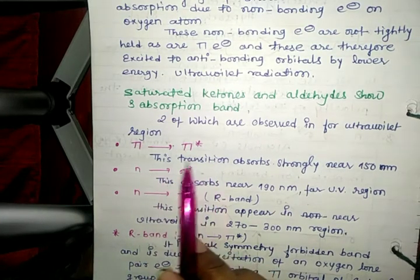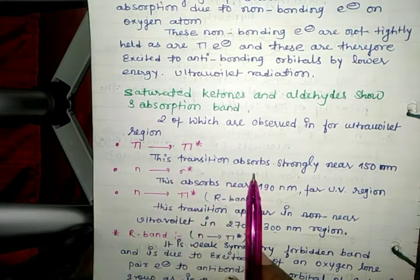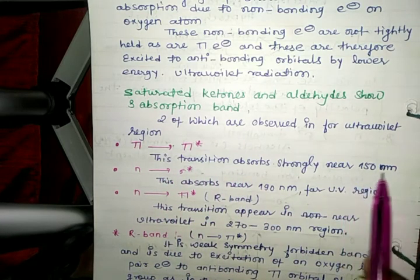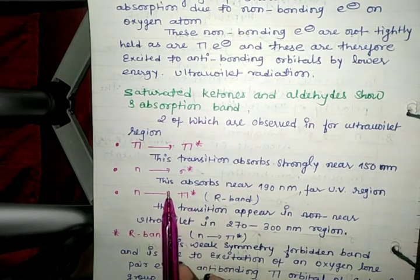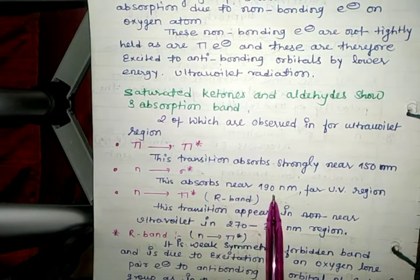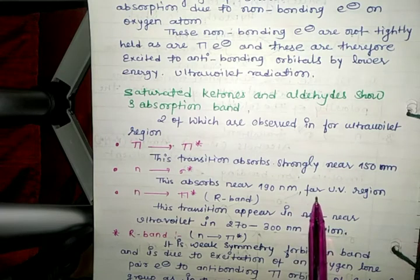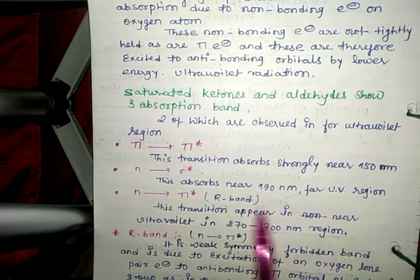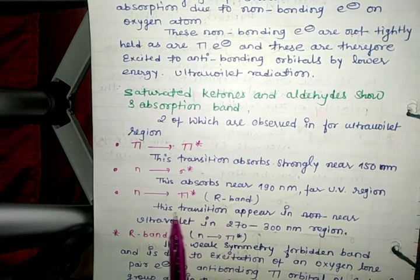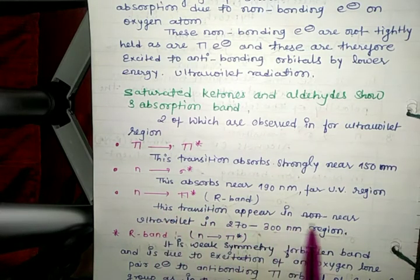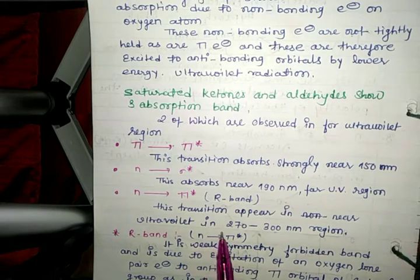Pi to pi star transition absorbs strongly near 150 nanometers. N to sigma star transition absorbs near 190 nanometers in the far ultraviolet region. N to pi star, also called the R-band transition, appears in the near ultraviolet at 270 to 300 nanometers.